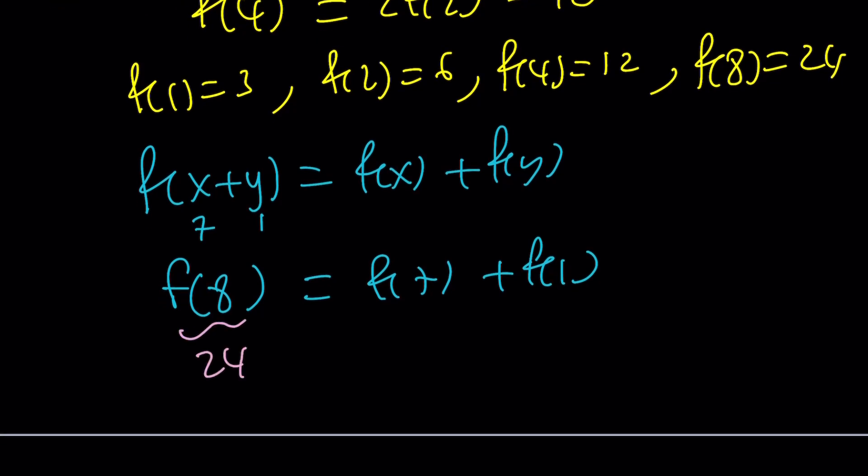See how functions work? f of 8 equals f of 7 plus f of 1. f of 8 is 24, f of 7 we don't know, and we do know that f of 1 is 3. By way of subtraction, f of 7 is just going to be 21.